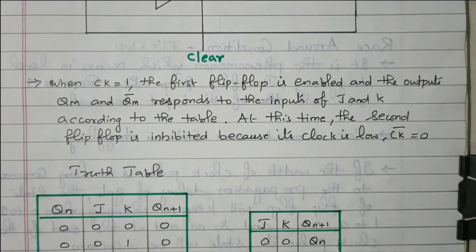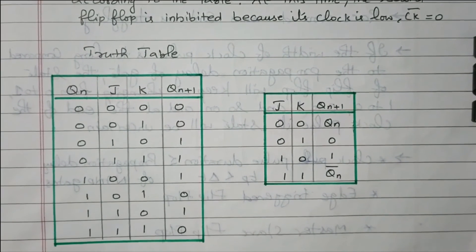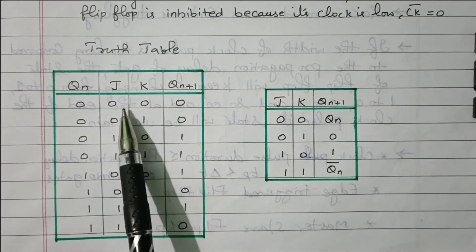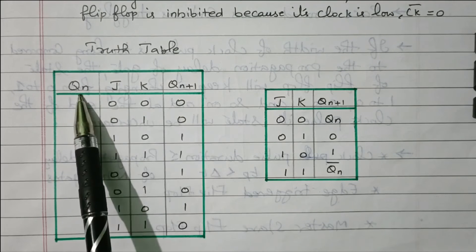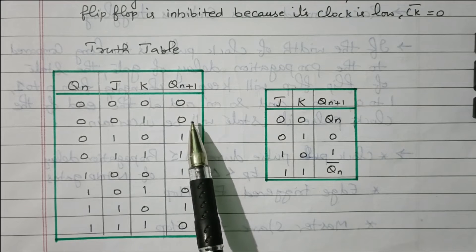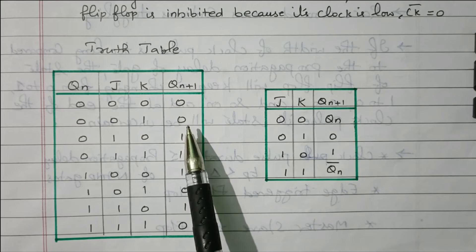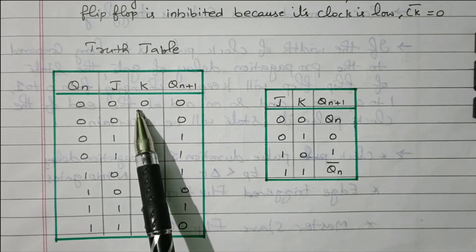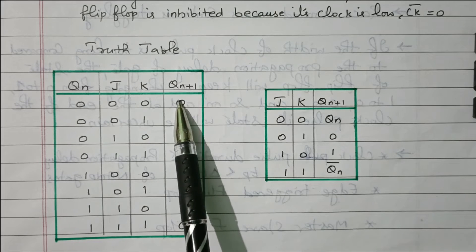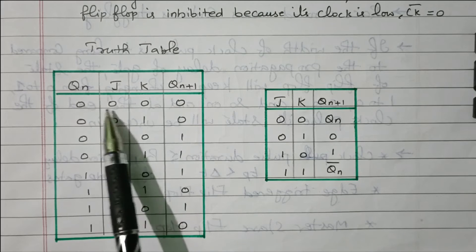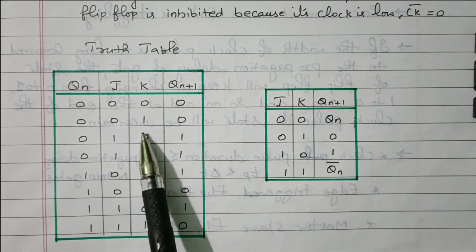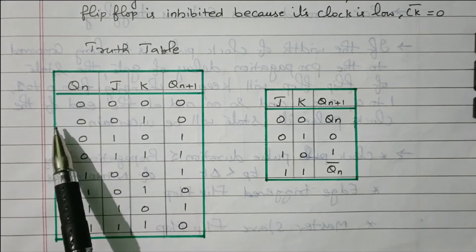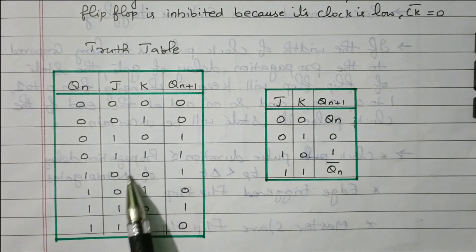Now we will see the truth table of the JK flip-flop. When the clock pulse is applied, what will happen? There are two inputs, J and K. QN is the present state and QN+1 is the next state. We know that the flip-flop is a storage element that stores 1-bit data. The output (next state) depends upon the input as well as the previously available output. So QN+1 depends upon J, K (the two inputs) and the previously available output QN.